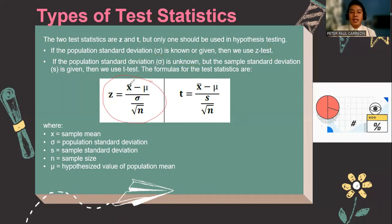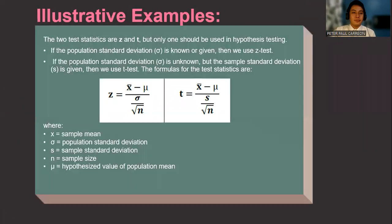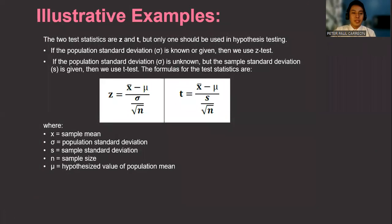For the Z test, we have X bar minus mu over sigma over the square root of N. And for the T test, we have T equals X bar minus mu over S over the square root of N.